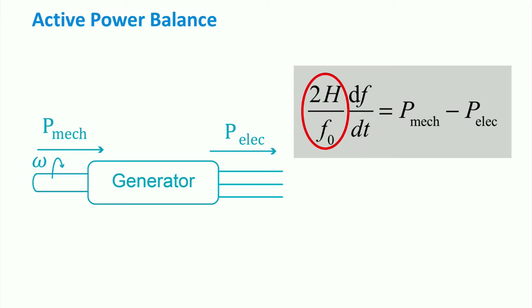The inertia constant is represented by the term H, and is divided here by the base network frequency. The inertia constant depends on the angular momentum J of the turbine generator set, on the system-based power Sb, and on the angular speed of the rotor, omega-squared.